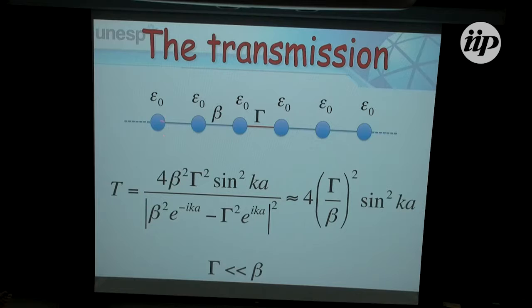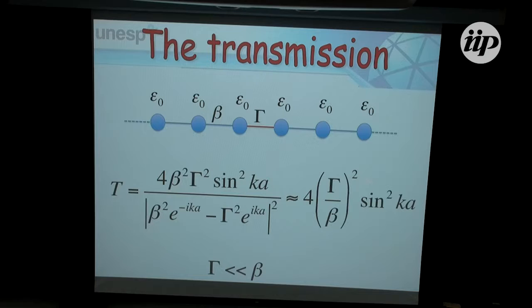If you consider that gamma is quite small compared to beta — where beta is the electron hopping — meaning I have a very wide-band metal on both sides with a small constriction in the middle, so a very weak coupling between the two, then I get a situation like this. You can clearly see that if I make beta equal to gamma squared, then the transmission probability is equal to 1. So you recover the ideal case solution, but you get a description like this one for the sine squared.